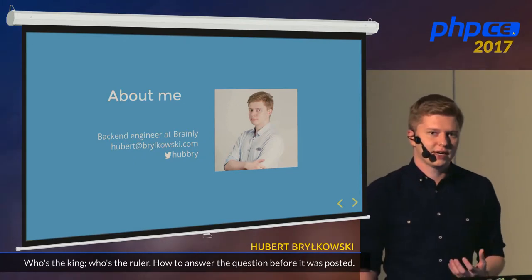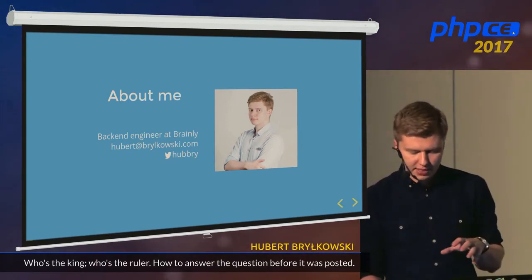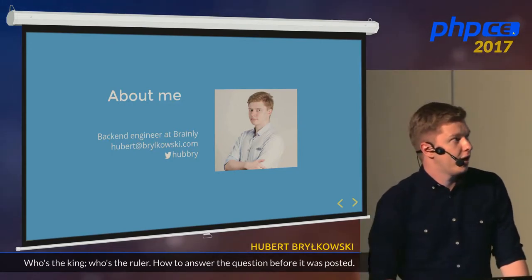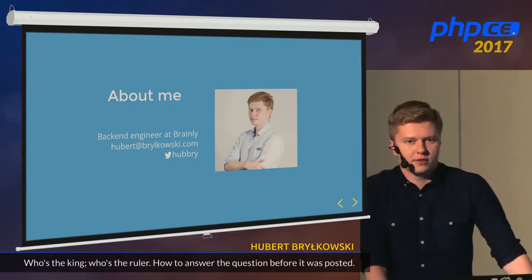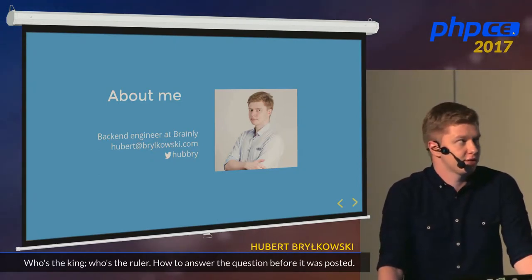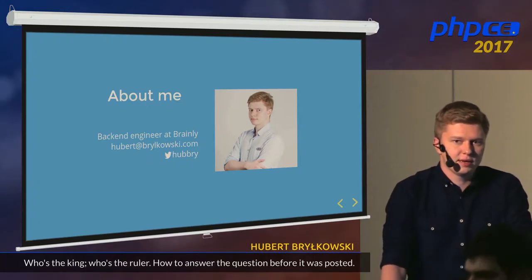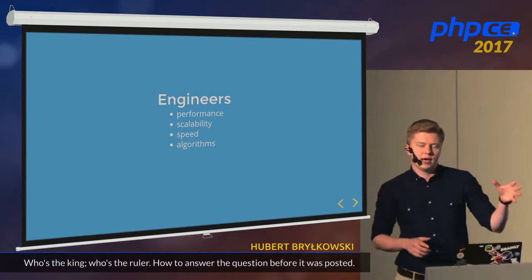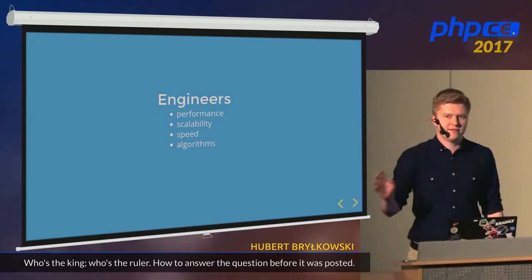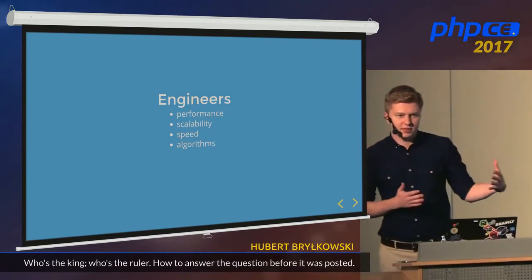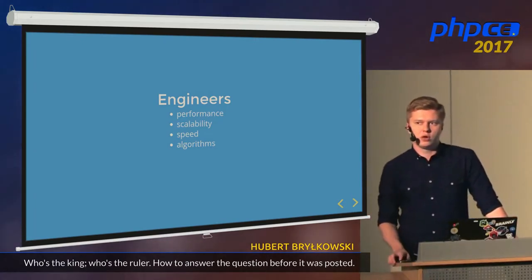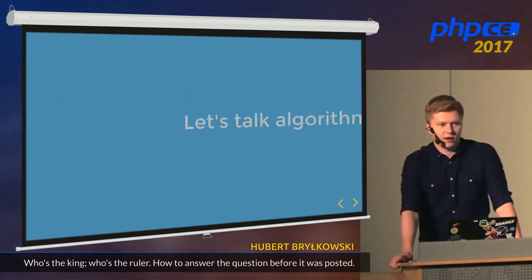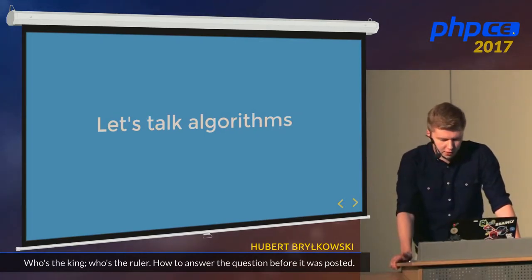Usually we don't have any kind of metrics to say this thing is definitely better than that one — 'this framework is definitely better because I think so.' On the other hand, we are also in a big part engineers. We have to take care of performance, scalability, and speed. And this kind can be easily measurable. We can always say, 'Hey, this app responds 20% faster now after my improvements.' So this is the part where we can clearly show what's going on and how well it's performing.